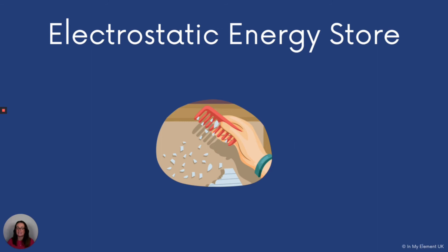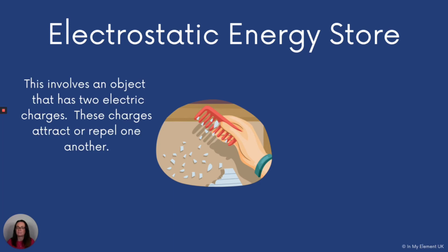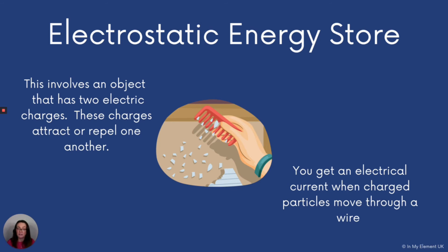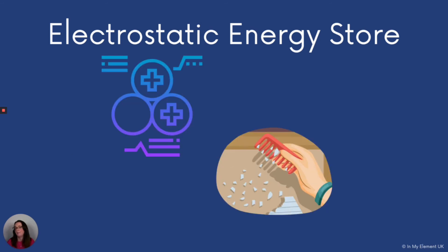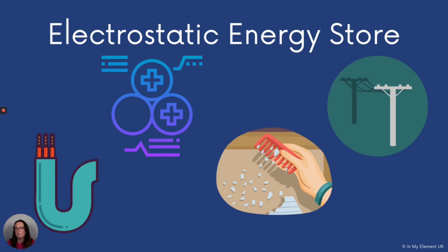Okay, electrostatic energy store — this one is a little bit different. This can be found between two objects that have two electric charges, and these charges attract or repel one another, which means they have energy in their electrostatic energy store. You get an electrical current when the charged particles move through the wire. The images here represent electrostatic energy stores: you've got the wire from a plug, the charges in the purple and blue one, the comb with static electricity showing charges, and the pylons showing you the national grid and the electricity flowing through that.